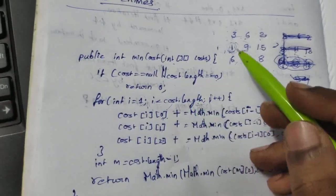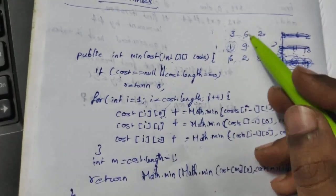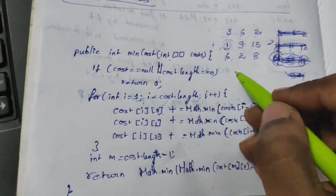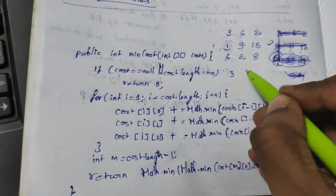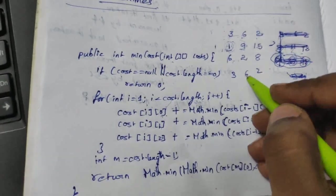After each iteration I will show you how this matrix is going to look. For example after first iteration this matrix is going to look like this: 3, 6, 2 since we are not changing the first row.